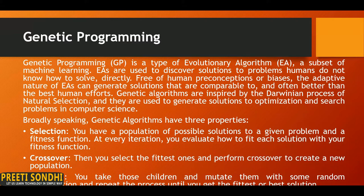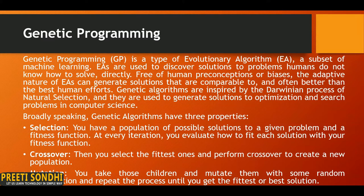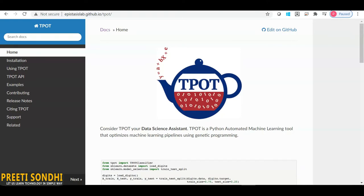In TPOT, it tries a pipeline, evaluates its performance, and randomly changes parts of the pipeline in the search for a better-performing algorithm. It has three properties: selection, crossover, and mutation. In selection, it takes a population of possible solutions and a fitness function, and at every iteration each solution is evaluated. In crossover, it selects the fittest solutions and performs crossover to create a new population. In mutation, it takes those children and mutates them with random modifications until the fittest or best solution is found.